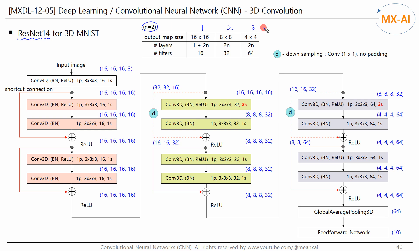In the previous video, we built a residual network model using 2D convolution and 2D pooling to classify CIFAR-10 images. In this video, we will build a residual network model using 3D convolution and 3D pooling to classify 3D MNIST images.